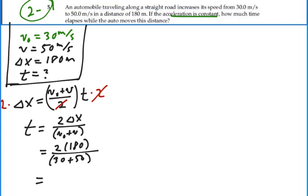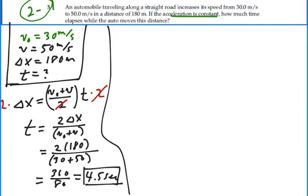2 times 180. 360 divided by 80. So that is the time that elapses while the auto moves this distance.